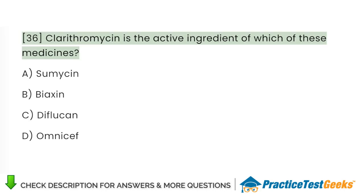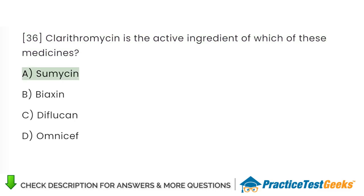Clarithromycin is the active ingredient of which of these medicines? A. Sumacin. B. Biaxin. C. Diflucan. D. Omnicef.